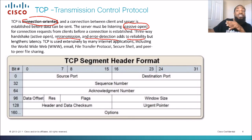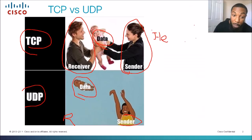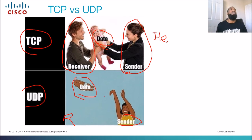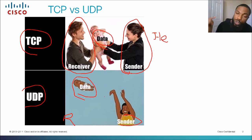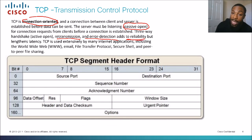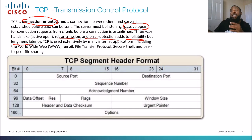TCP is a reliable transport protocol. Why? Because it requires the other end to acknowledge that they've received it. UDP doesn't do that — we don't care if the other person got it, so that's why we say it's not reliable. The three-way handshake, active open, retransmission, and error detection all add to reliability, but they also lengthen latency because they add overhead.